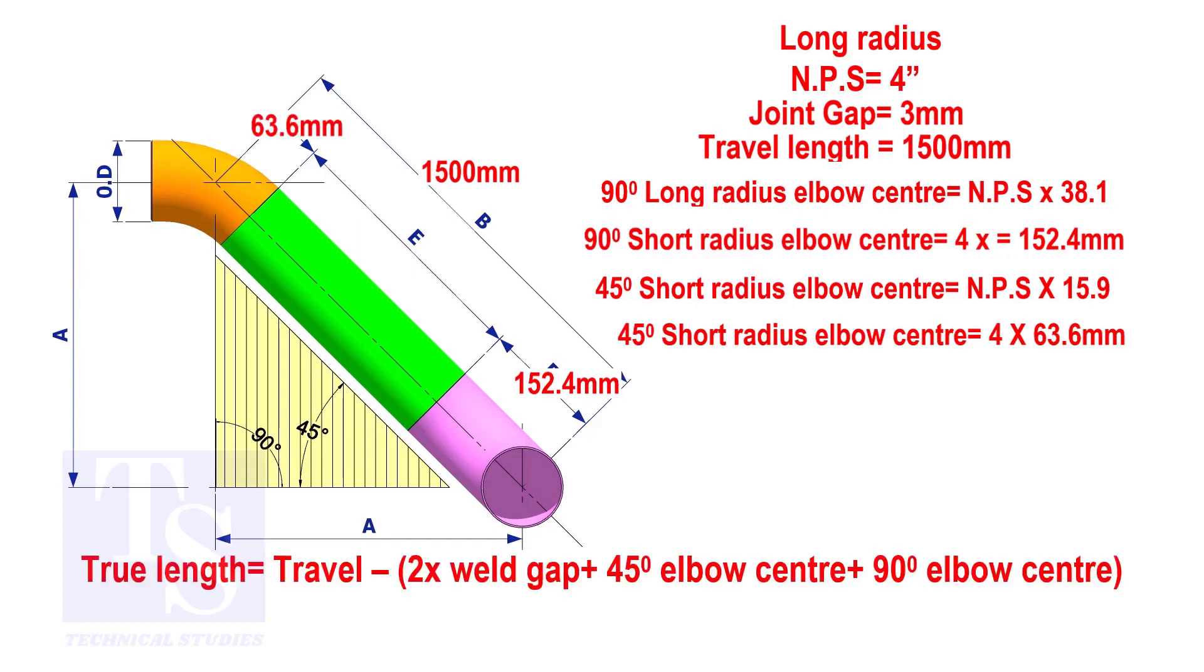Apply the calculation. The true length of the pipe is 1,278 millimeters.